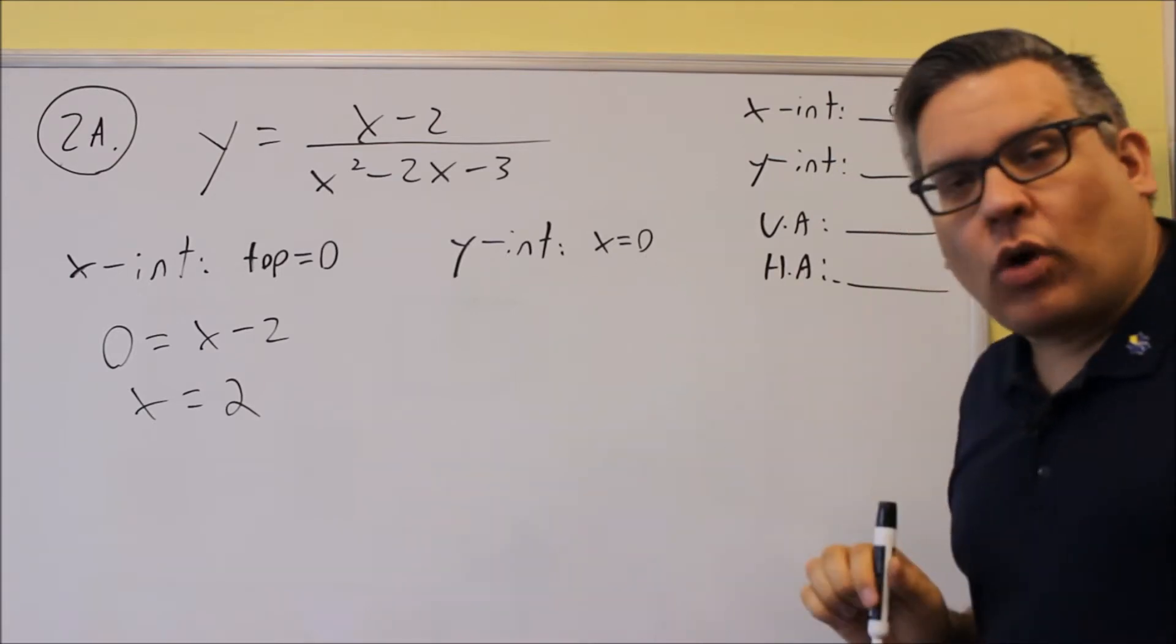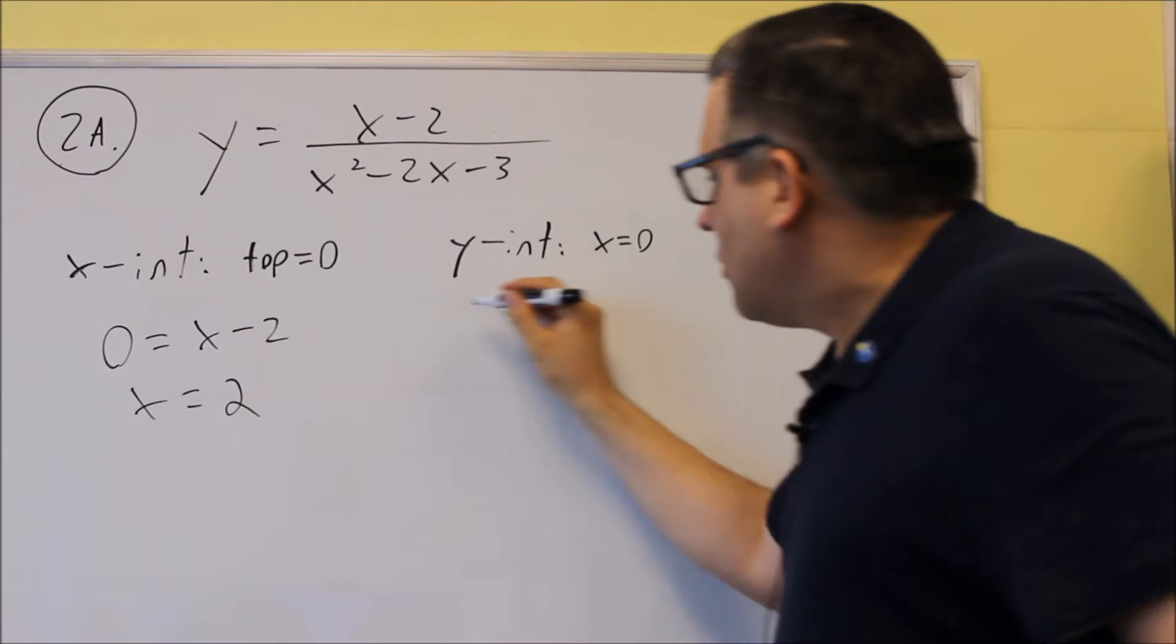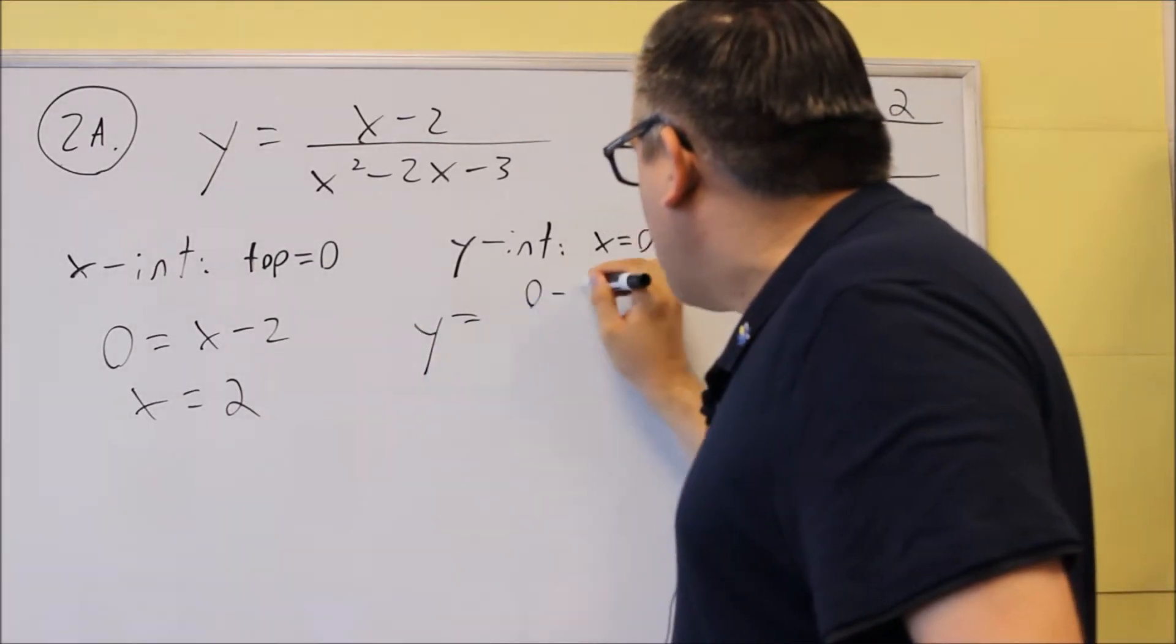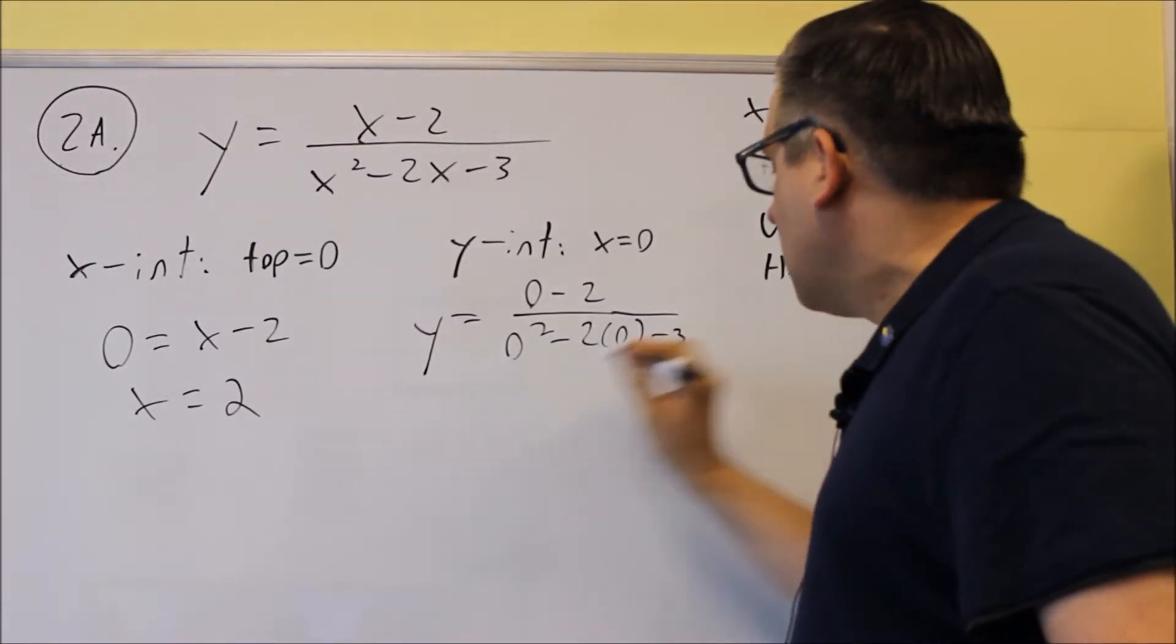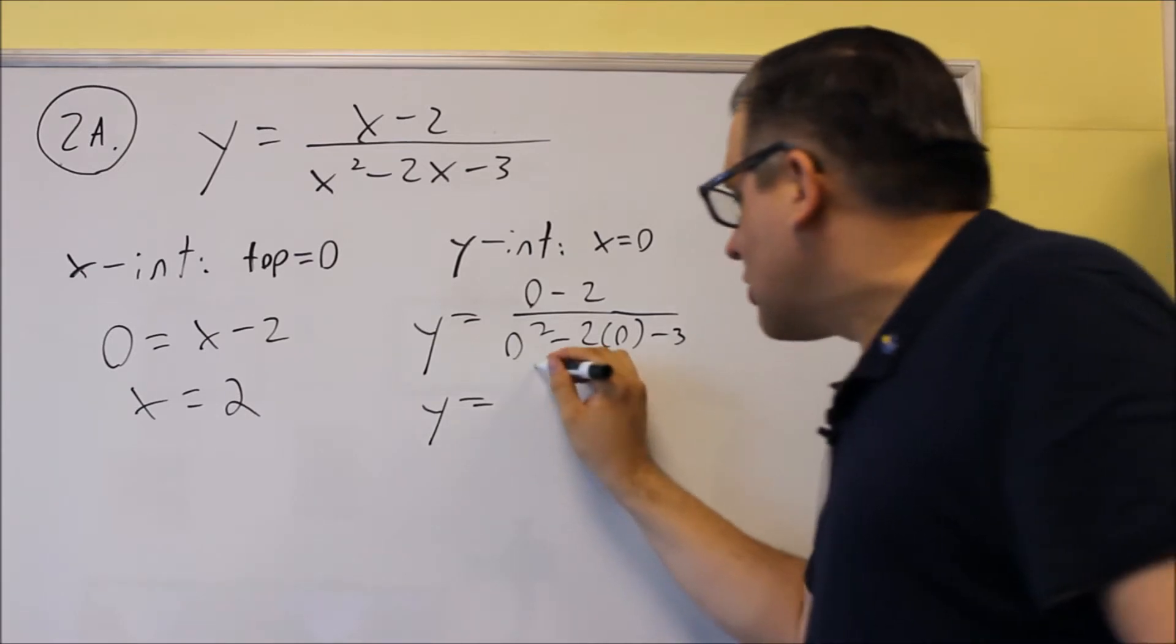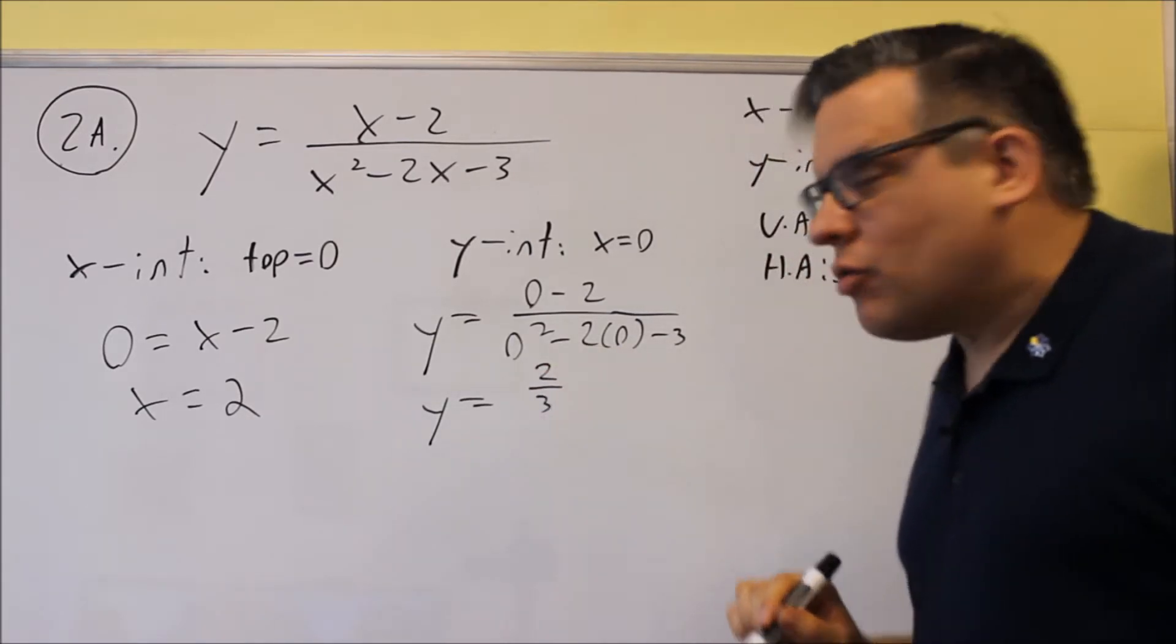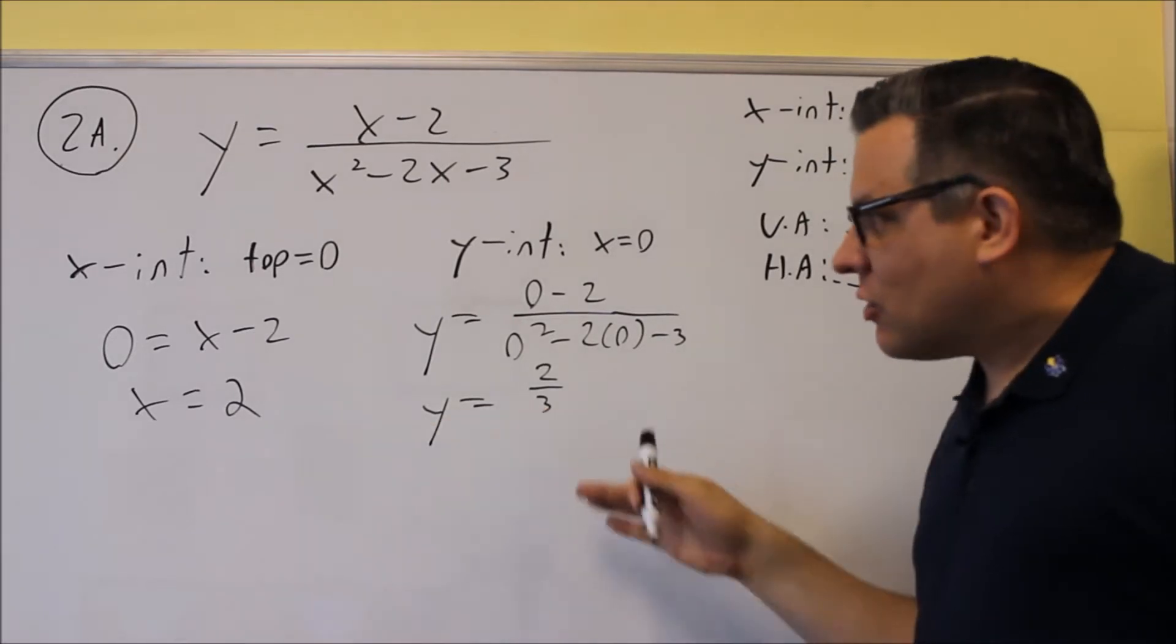Next, the y-intercept is where you put in zero for x. So if we do that, we get zero minus two over zero squared minus two times zero minus three, and then I end up getting negative two over negative three, which is the same thing as two-thirds, so two-thirds would go right here.